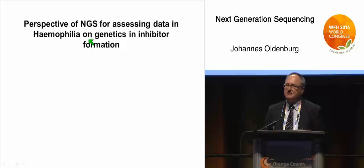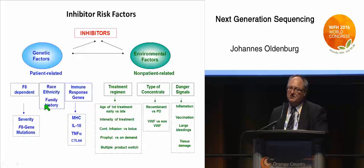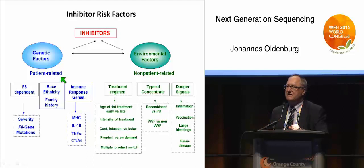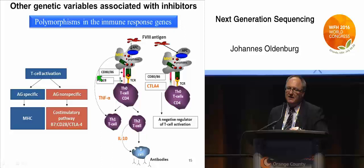I would like to address the perspective of next generation sequencing for assessing genetic data on inhibitor formation in hemophilia, which is a major burden and still poorly understood. We have a number of genetic risk factors: the factor VIII gene mutation is our leading risk factor, but ethnicity and within it multiple genetic risk factors, as well as immune response genes, also play a role. Every six months, another immune response gene is published contributing to inhibitor formation risk, but at the moment all these data are very fragmented, and we have no tools to integrate them for a single patient.